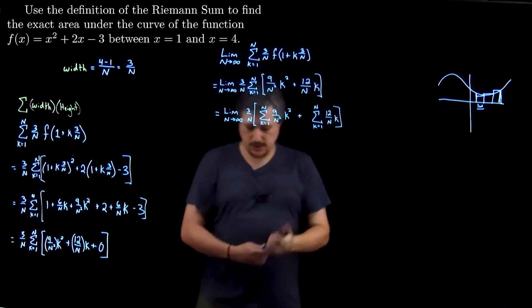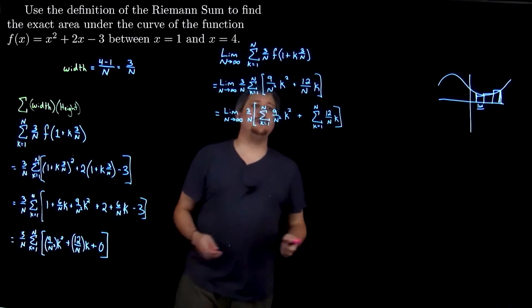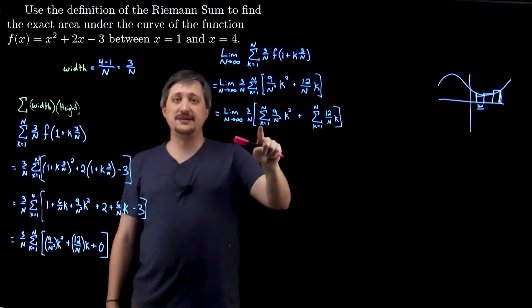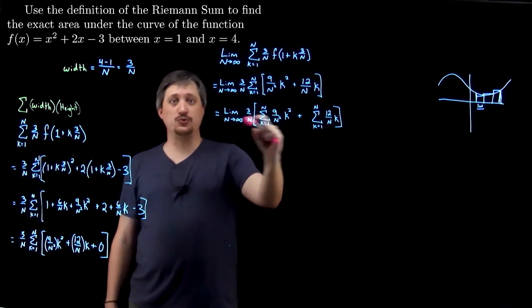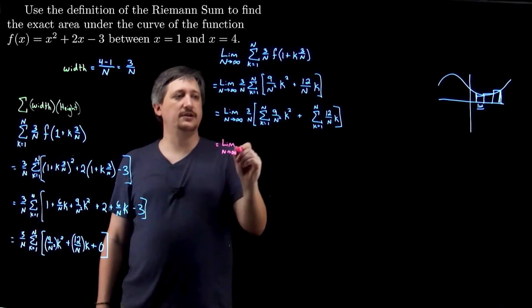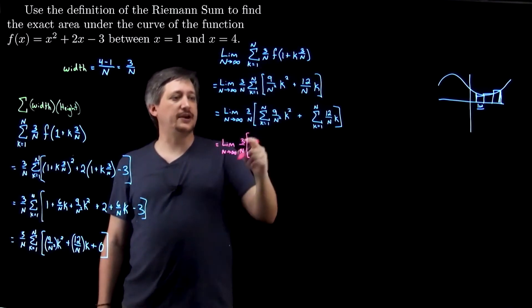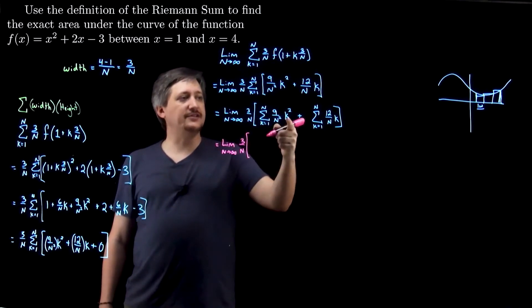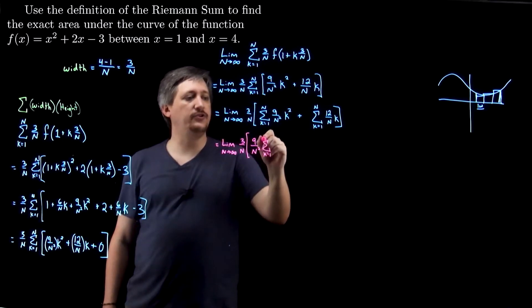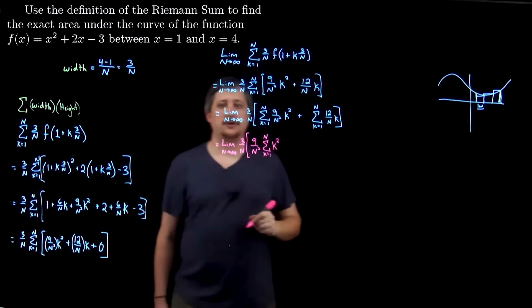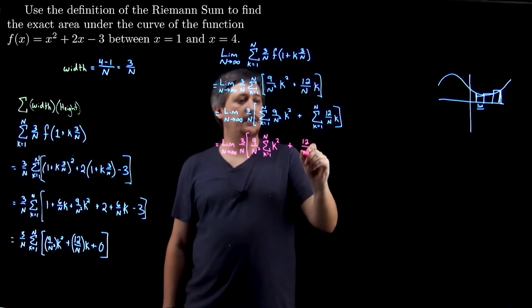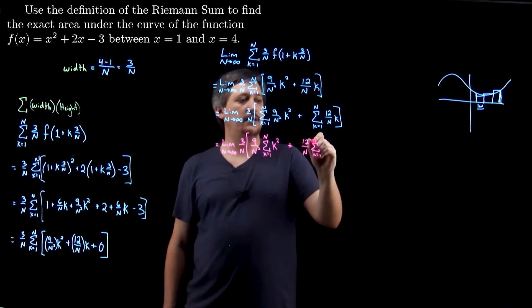Why split the sum? The next step is to pull out anything that doesn't depend on K — K is the index, that's what changes. Anything that doesn't depend on K can be pulled in front of the sum. So nine over N squared doesn't depend on K, so it comes out: nine over N squared times the sum K from one to N of K squared. Similarly, twelve over N doesn't depend on K, so it becomes twelve over N times the sum K from one to N of K.